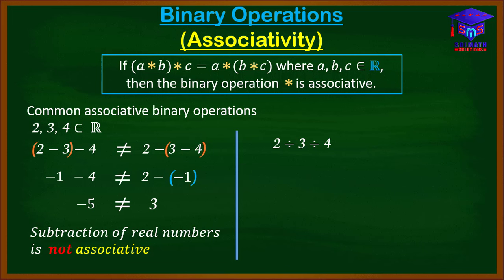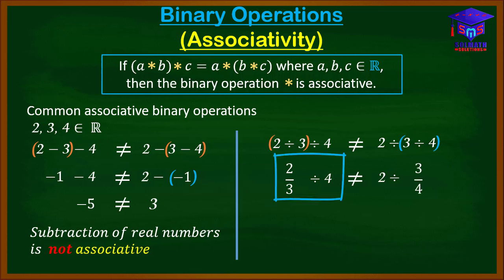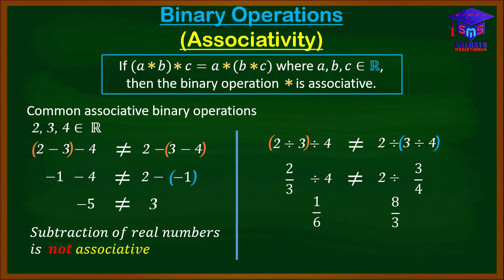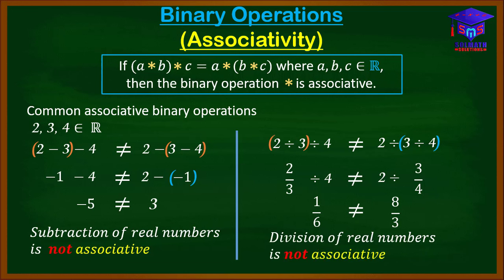Similarly, division of real numbers is not associative. If you divide 2 by 3 and then divide by 4, that is not equal to the result when you divide 3 by 4 first. So (2÷3)÷4 = (2/3)÷4 = 1/6, but 2÷(3÷4) = 2÷(3/4) = 8/3, which is not equal to 1/6. Therefore, division of real numbers is not associative.